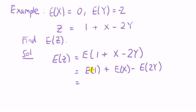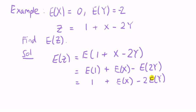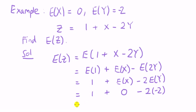The expected value of a constant is a constant, so that's one, plus E[x], minus two times E[y] — taking the constant out by rule two. The minus is preserved when taking the expectation through. Substituting: E[x] is zero, E[y] is minus two, so minus two times minus two is plus four. One plus zero plus four equals five.